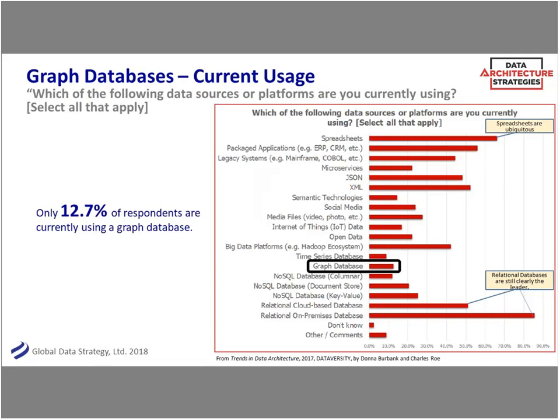I called out a trend paper that Dataversity and my colleague Charles Rowe put together late last year - trends in data architecture in general. One question was: who today is actually using a graph database? Still a fairly small percentage - about 12.7%, just under 13% - are currently using a graph database. Compare that to relational databases, which are still clearly the leader, whether in the cloud or on-premises.